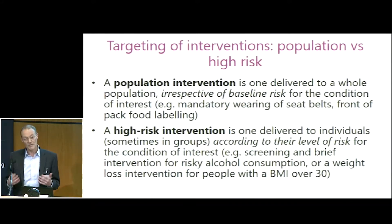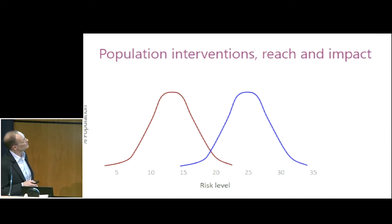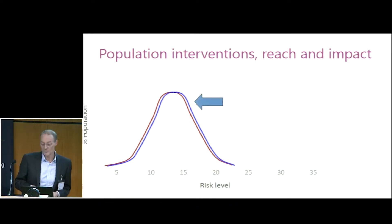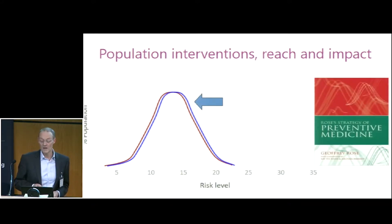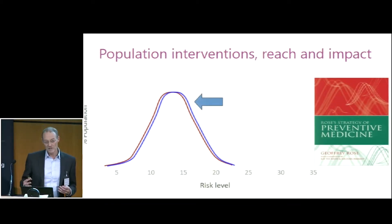Now, both of these are important, but they both have a different part to play in public health. If we do a high-risk intervention, we intervene at the top of the risk distribution. In a population intervention, what we try to do is shift the whole population distribution to the left. These are the ideas put forward by the late Geoffrey Rose in his book, The Strategy of Preventive Medicine.